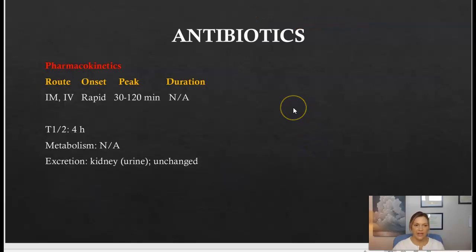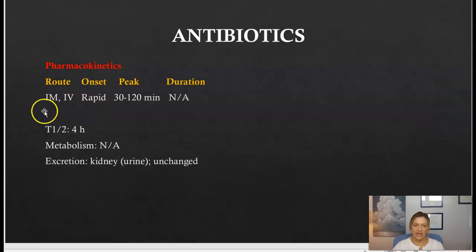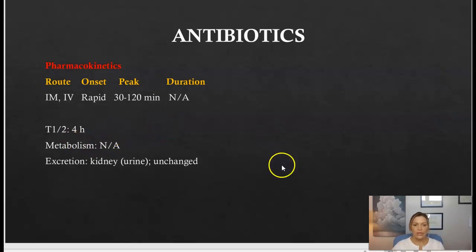The pharmacokinetics for the carbapenems — again, I don't want you to memorize this; it's just to supplement your learning. These medications can be given IM or IV, which gives them a rapid onset, and the half-life is around four hours. They are excreted through the kidneys.